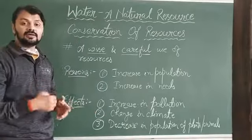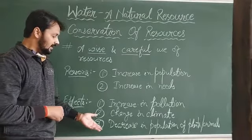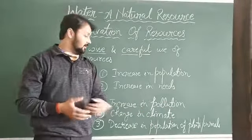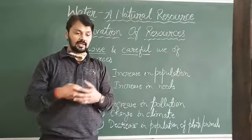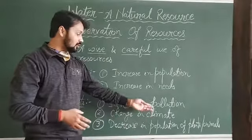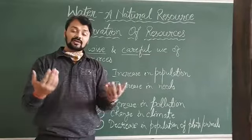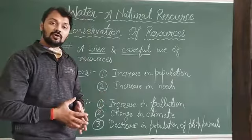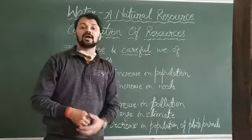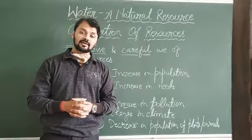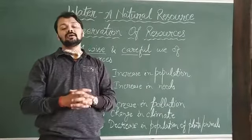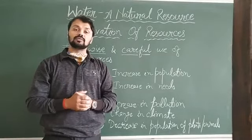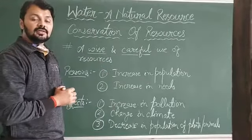The third effect is a decrease in the population of plants and animals. When climate change occurs and animals do not get proper feeding, and as construction areas are increasing due to human population growth, they are not getting forests or green plants for their food. So the population of plants and animals is also decreasing. Since we are directly dependent on plants and animals for our survival, we must conserve our resources for human survival and for the betterment of our environment.